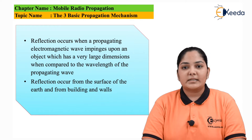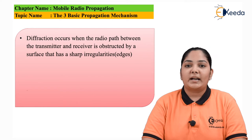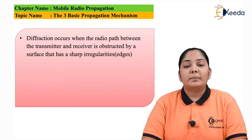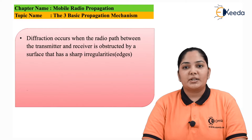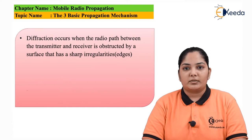Let us now move to the next method, called diffraction. Diffraction occurs when radio waves that are propagating are obstructed by sharp edges. When they are obstructed by sharp edges, secondary waves are formed, and these waves travel in all directions. In other words, there is a bending of the wave that takes place.